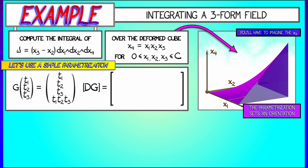We can take the derivative of that. It's going to have three columns. The first, the partial with respect to t1, is (1, 0, 0, t2·t3). The second is (0, 1, 0, t1·t3), and the third column is (0, 0, 1, t1·t2).